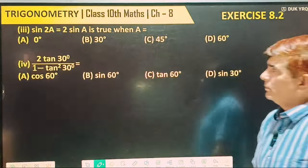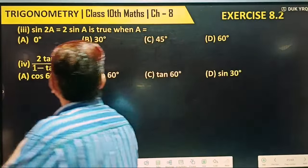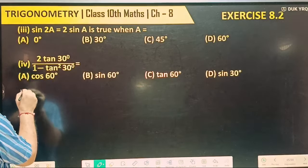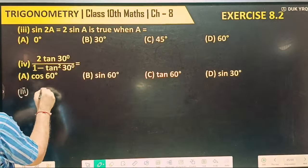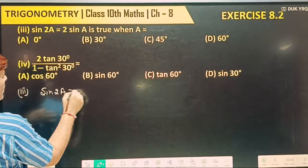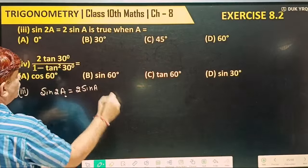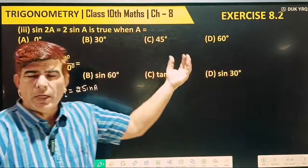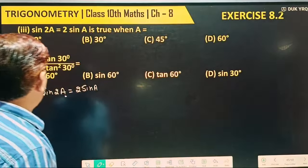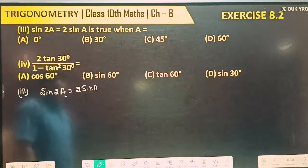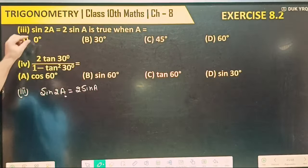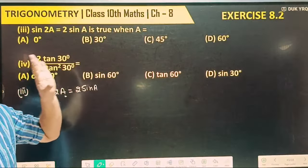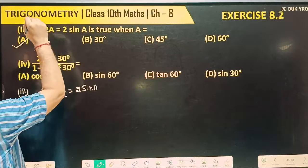Third part: we have to determine when sine 2a equals 2 sin a is true. One way is to put the value of the angle. If you put 0 degree, sine 0 is 0, and 2 sin 0 is also 0. So according to that, a equals 0 degree satisfies the equation.